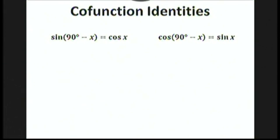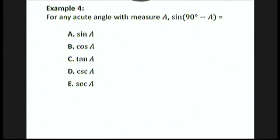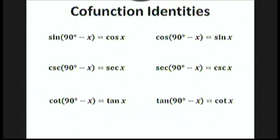Next, let's talk about the co-function identities. The sine of 90 degrees minus x is just the cosine of x, and the cosine of 90 degrees minus x is sine x. We say that sine and cosine are co-functions. Here's an ACT math question: for any acute angle with measure A, sine of 90 minus A equals — well, if you know the co-function identity, it's obviously cosine of A, choice B. For completeness, cosecant and secant are also co-functions, and cotangent and tangent are co-functions.